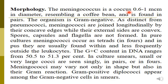Regarding the morphology of this bacterium, the meningococcus is a coccus 0.6–1 micrometer in diameter, resembling a coffee bean, and is found in pairs. The organism is gram-negative. There is a distinct form of diplococci — meningococci — these form with concave edges while their external sides are convex, as you will see in the following photos.